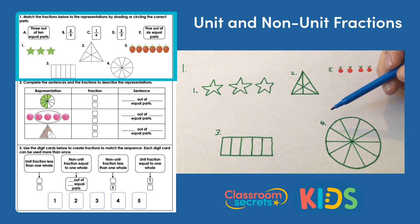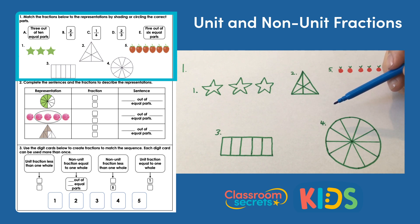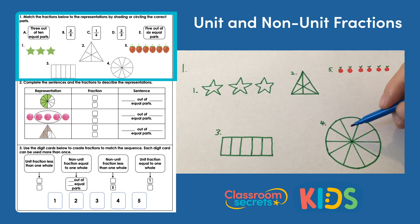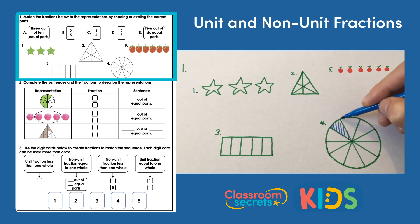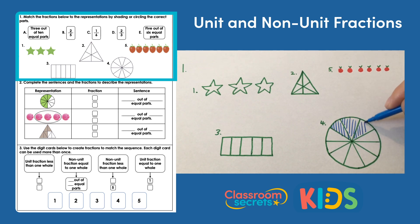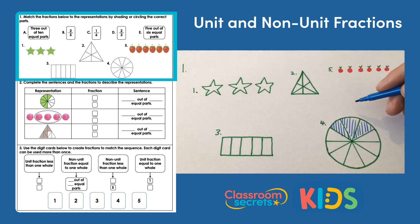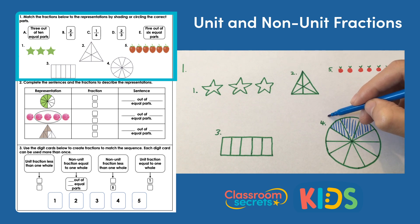Let's look at A: three out of ten equal parts. The only one showing ten equal parts is number four down here. We're going to shade three of those parts in, which means our fraction would be three tenths, or three out of ten equal parts. So A matches to four.